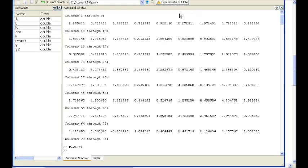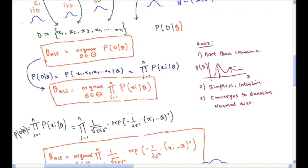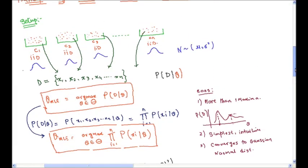You might wonder how these temperatures were collected. Well, you can assume you send 100 different people to 100 different places within that small region to measure the temperature, or you go 100 times at 100 different locations. The idea is that all these data samples are assumed to be independent. You can consider C1, C2, C3, C4, Cn as 100 different containers, each with only one sample. The measurement at each new place is independent of the measurement from the previous place. That is the basic assumption.